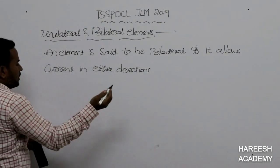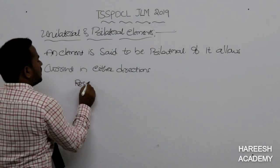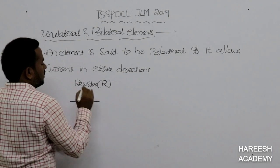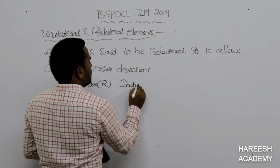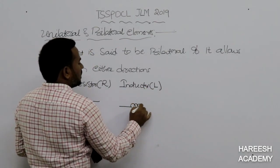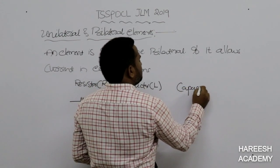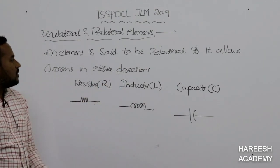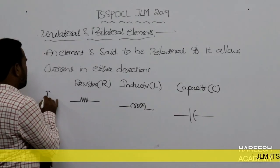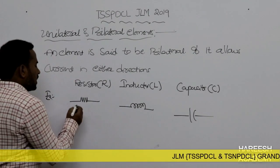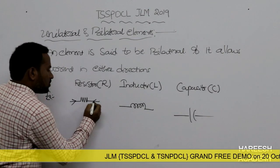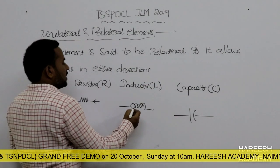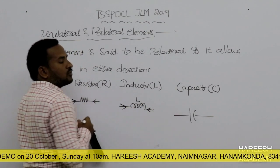For example, the RLC elements — resistor, inductor, and capacitor — are bilateral elements. These elements allow current to flow in either direction. The resistor, inductor, and capacitor are all examples of bilateral elements.